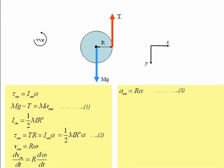From equation 2, we know that the tension is equal to a half times the mass times the radius times the angular acceleration alpha. However, substituting in for the angular acceleration from equation 3, in other words alpha is just equal to a_cm, the acceleration of the centre of mass divided by the radius R of the yo-yo, we will get that the tension is equal to a half times the mass times the acceleration of the centre of mass of the yo-yo.